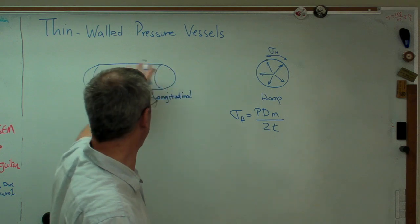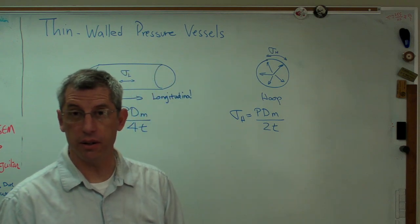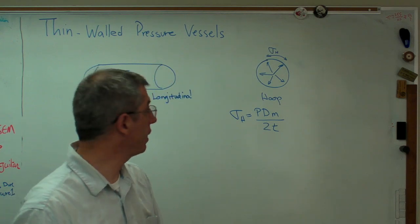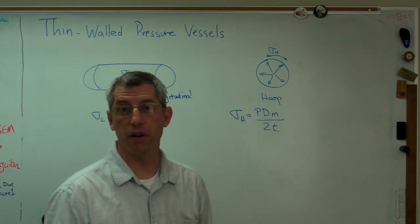All right? Now, we're assuming a lot of things here. We're assuming constant cross-section. We're assuming constant uniform wall thickness. And we're also assuming hemispherical end caps.